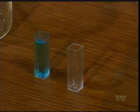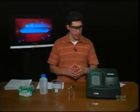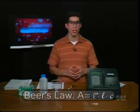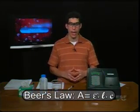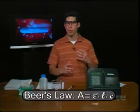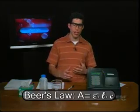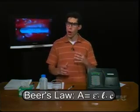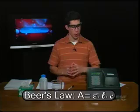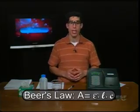So what does this do for us? How can the spectrometer, by just giving us an absorbance value, do anything? Well, the spectrometer measures absorbance, and we can relate absorbance to concentration using what's known as Beer's Law. Beer's Law just relates absorbance, concentration, and path length all in one nice simple equation that you'll be using in lab.